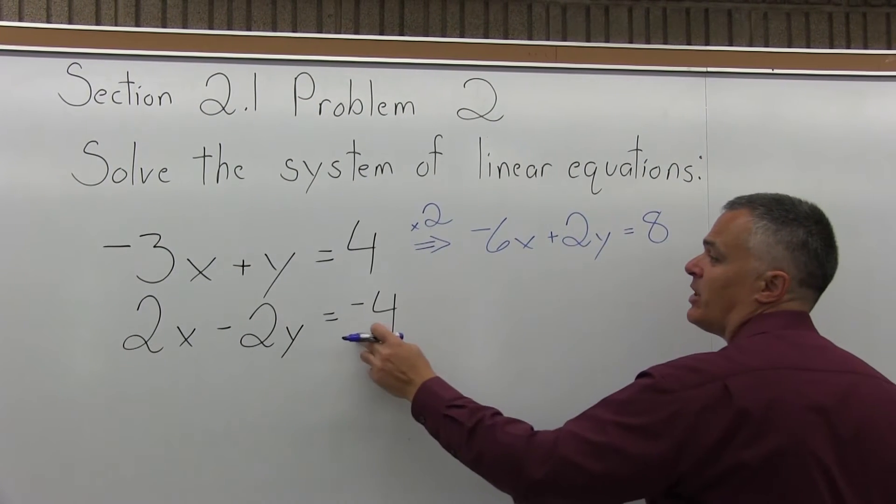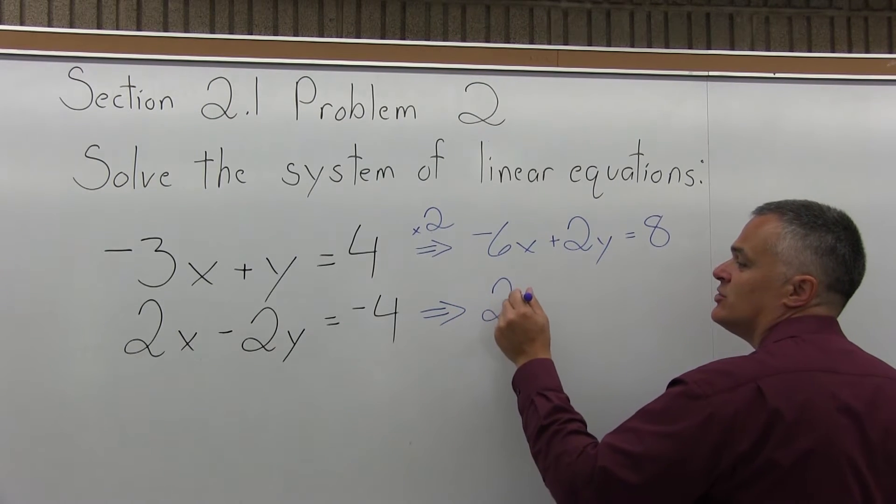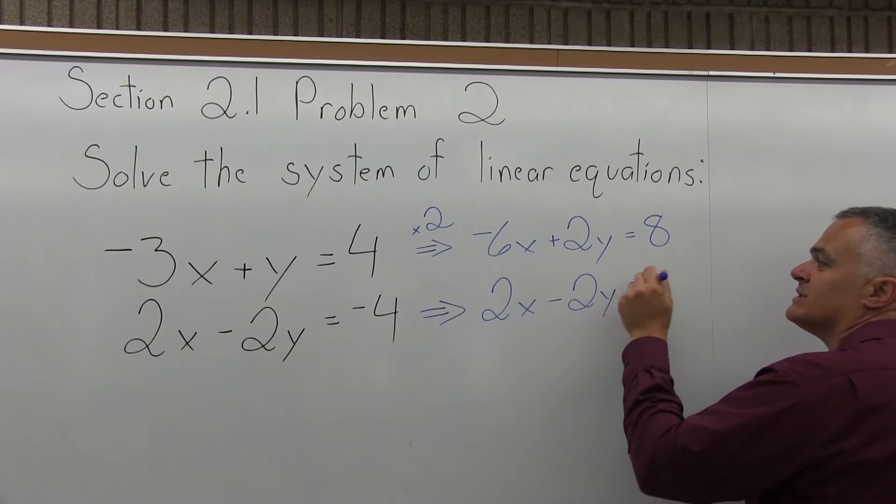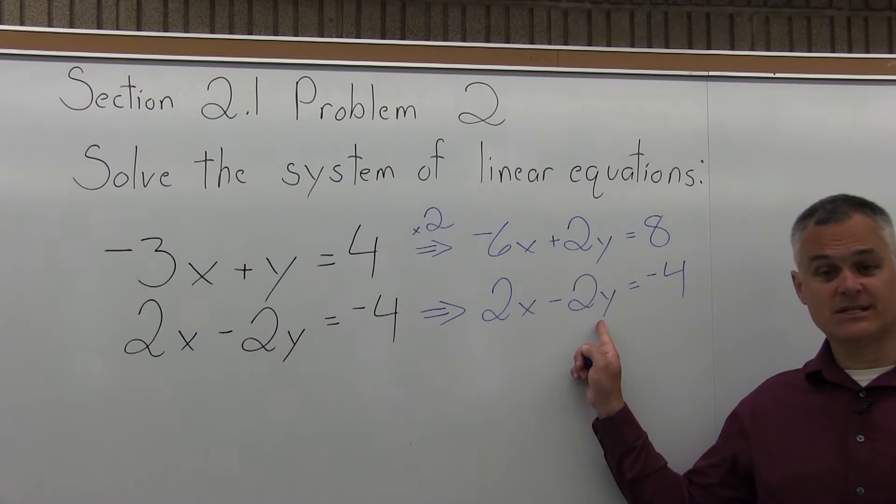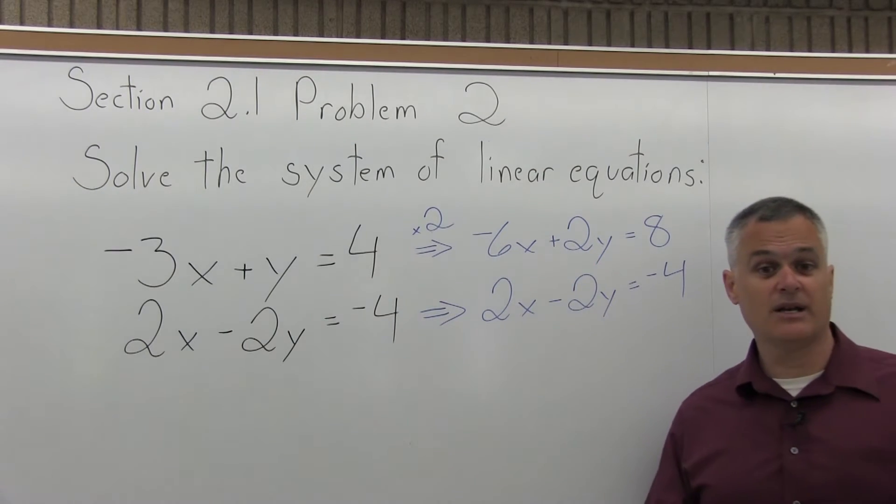And then the bottom equation can stay as it is. It stays 2x minus 2y equals negative 4. So now one of my variables has the same number in front but with opposite signs. I have a positive 2y and a negative 2y.